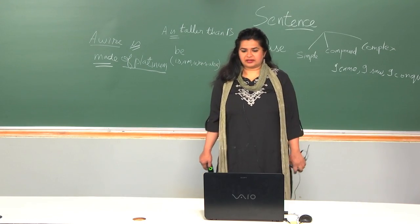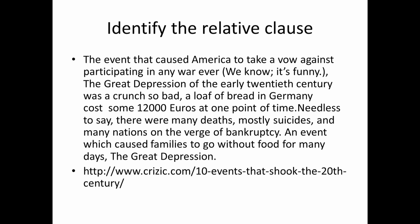Take a look at this particular passage — I would like you to identify the relative clause. 'The event that caused America to take a vow against the great depression of the early 20th century was a crunch so bad, a loaf of bread in Germany cost some 12,000 euros at one point of time. Needless to say, there were many deaths, mostly suicides, and many nations on the verge of bankruptcy. An event which caused families to go without food for many days — the great depression.' Look at the last sentence — a very good example of higher-order writing. The main noun phrase comes at the fag end of the sentence: 'An event which caused...' — and this is your relative clause.